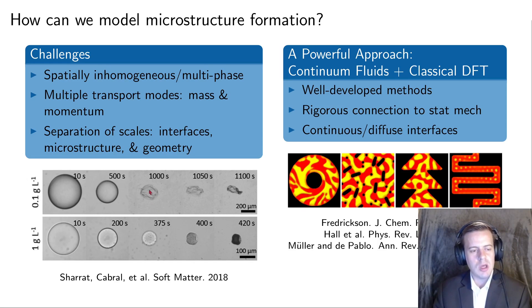This is actually pretty challenging to build a model of non-solvent-induced phase separation. You have spatially inhomogeneous materials. You've got multiple phases. You've got mass and momentum transport. And you have a separation of scales between the interfaces, the microstructure, and the geometry. I liked this example from some recent work by the Cabral Group in England. They were doing non-solvent-induced phase separation with these particles. You can see they're changing the polymer concentration. Diffusion causes this particle to shrink, and then you get the initiation of little domains, and that forms this solid particle that's this porous microparticle.